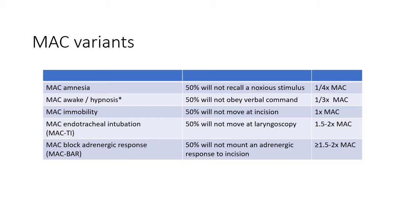There are several variants of MAC worth knowing about. MAC immobility is the concentration at which half the population won't move in response to a noxious stimulus. MAC awake is the concentration at which half the population won't obey verbal command during washout. MAC hypnosis is about the same as MAC awake, but is said to be a little higher due to pharmacodynamic hysteresis — that's to say, the concentration required to put a patient under is ever so slightly higher than that required to keep him under. MAC amnesia is the concentration at which half the population will not recall a noxious stimulus. MAC endotracheal intubation is the concentration at which half the population won't move at laryngoscopy. MAC BAR is the concentration at which half the population won't mount an adrenergic response to a noxious stimulus. Note that MAC and its variants are agent specific.